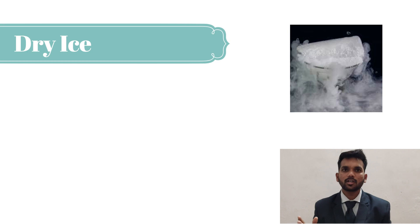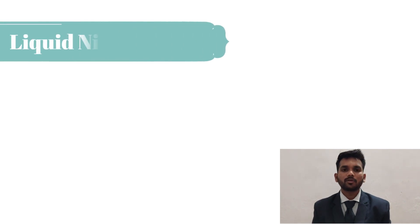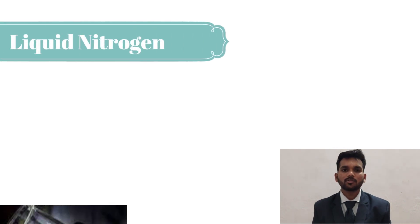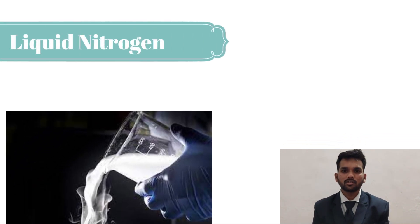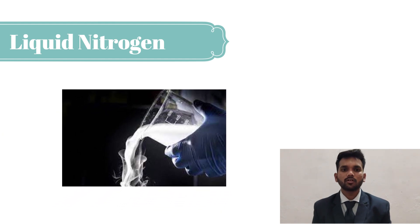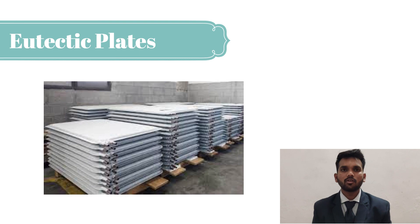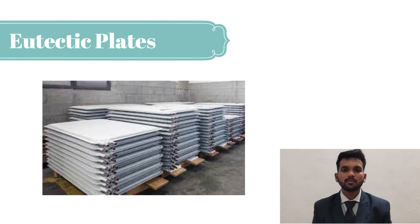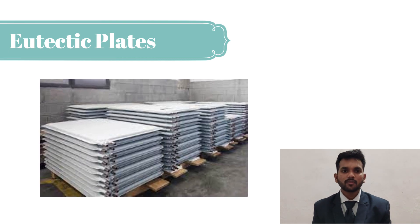Liquid nitrogen is used primarily to transport biological cargo such as organs and tissues, and keeps items frozen for longer periods. Eutectic plates, also called cold plates, are similar to gel packs but can be reused.